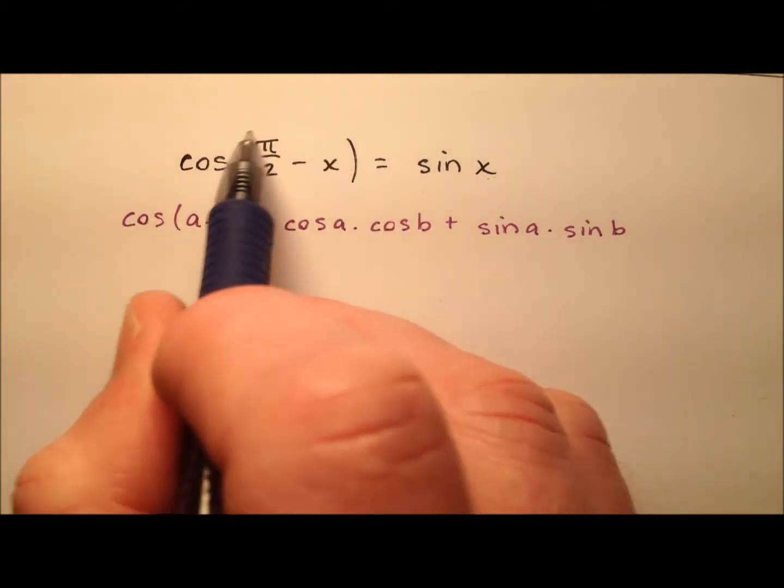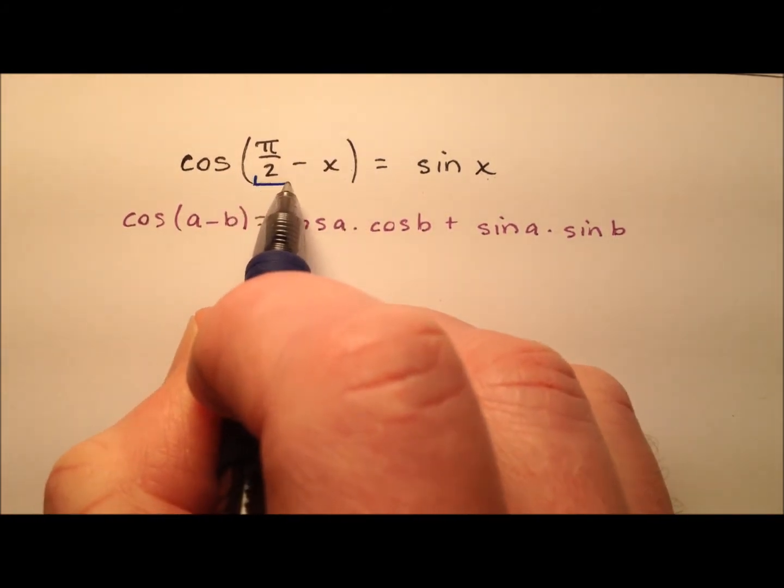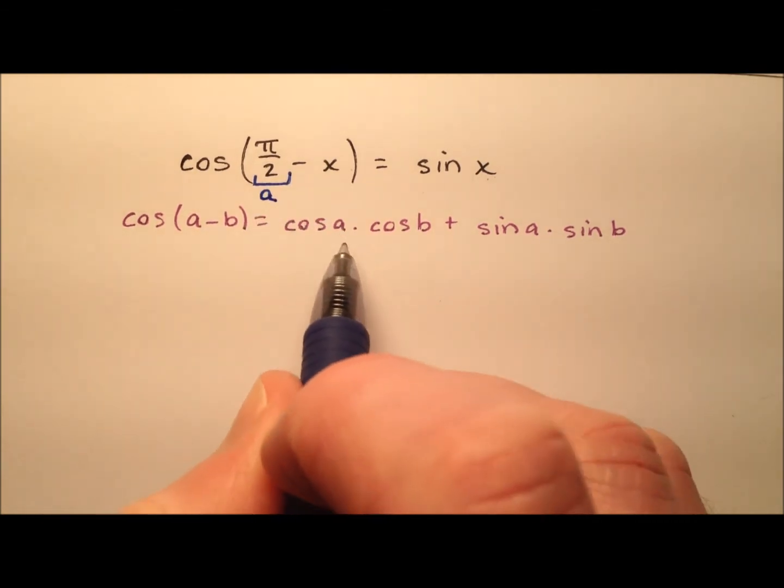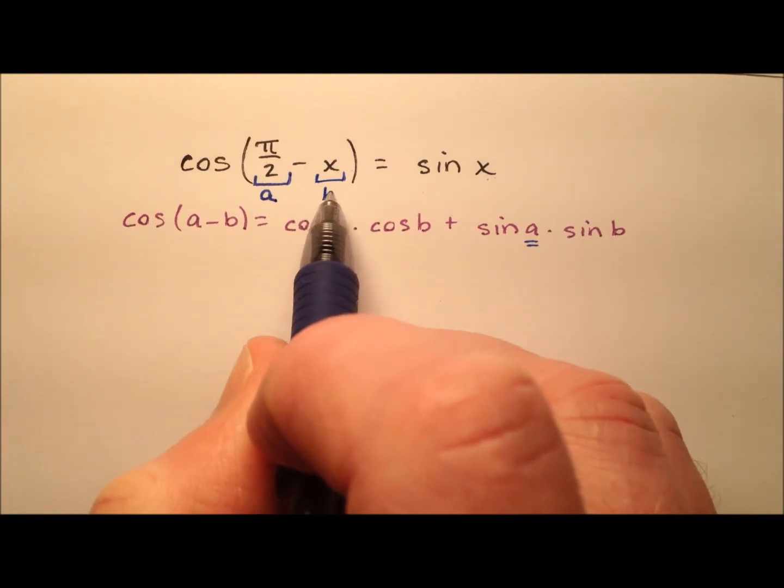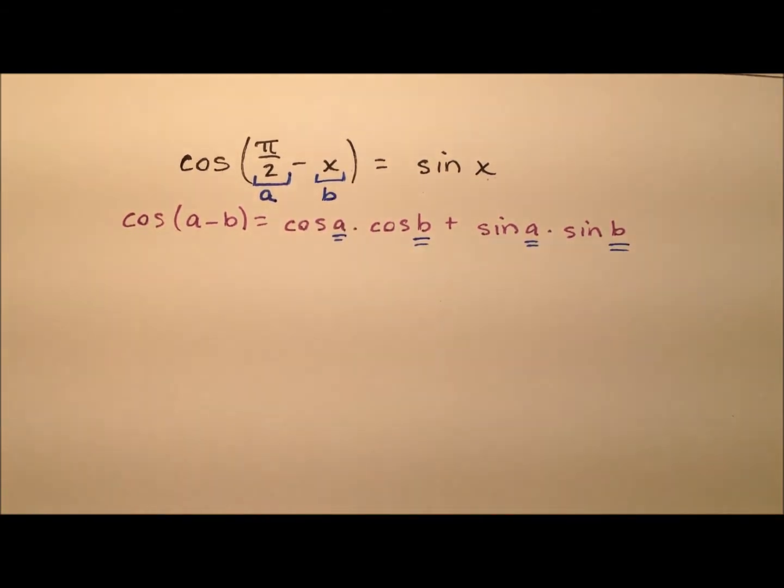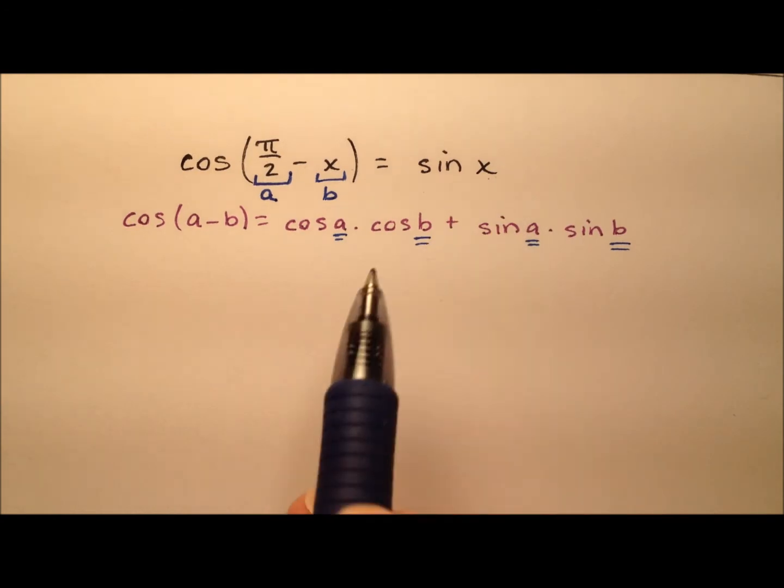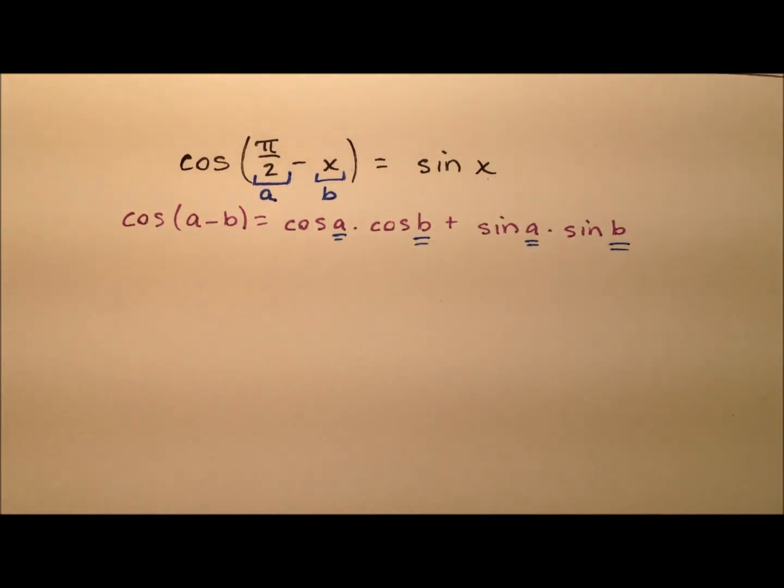So let's work with this left side, and this pi over 2, let's call that the a that we're going to put here and here, and this x value, we'll call that b, and we're going to put that right here and here. And we're saying that is going to equal the sine of x.